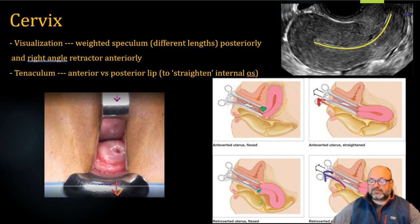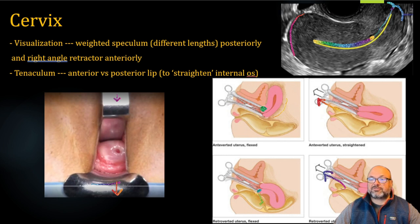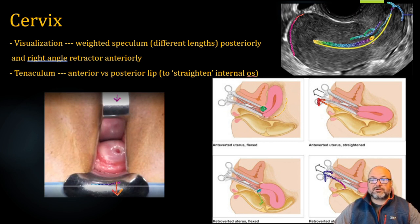What we're really concerned with here, as we can see in our ultrasound picture — external os, cervical canal, and internal os. We've got this bit of a change in angle coming up into the cavity itself, the endometrium, and then obviously the fundus up here from a transvaginal probe. Straightening the uterus really helps with this cervicouterine angle. The more we can straighten that out, the easier sounding and dilation and instrumentation are going to be. One of the most common places of perforation is via the internal os and then out the posterior wall of the uterus.